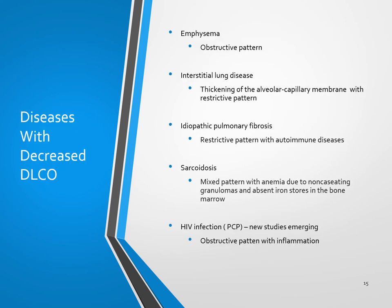Most disease processes out there will cause a decreased DLCO rather than an increased DLCO. All of these tests are done with spirometry, because that's part of identifying what kind of disorder you have. For example, emphysema on a PFT will show an obstructive pattern. The problem with emphysema is the destruction of the alveolar membrane, which causes a problem with surface area for gas diffusion.